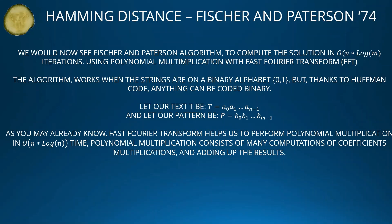We will now see the Fischer and Pedersen algorithm to compute the solution in O(N log M) time using polynomial multiplication with the fast Fourier transform (FFT). The algorithm works when the strings are on a binary alphabet — any alphabet of only two letters. But thanks to Huffman coding, anything can be encoded in binary.